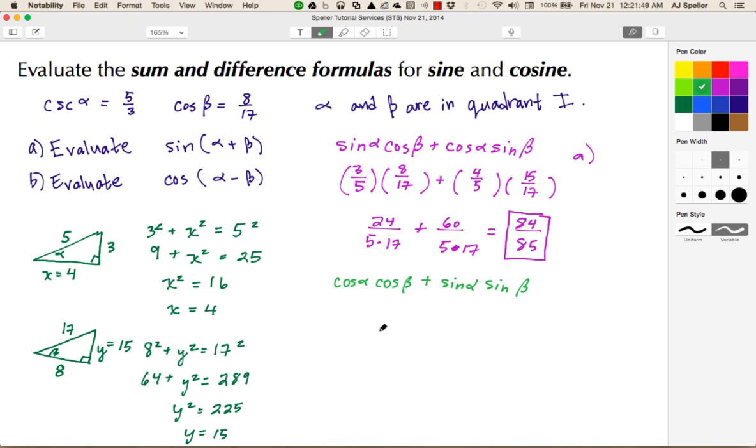Again, I'll fall back to these special triangles. Cosine alpha we found to be 4/5, cosine beta is 8/17, plus sine alpha is 3/5, and sine beta is 15/17. We could have gone back to the special triangles, but we've already done it, so I'm just reusing that work. We'll multiply these fractions and then simplify.